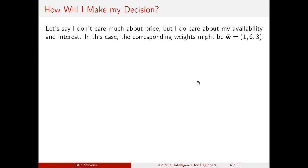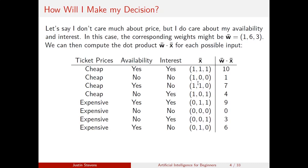Maybe I don't care much about the price, but I do care about both my availability and interest. I may encode this with corresponding weights 1, 6, 3. These weights are really the heart of what we're going to be talking about for the rest of the presentation. For each possible input state, we're going to compute the dot product — weights dot my input — and we'll get a scalar value out.